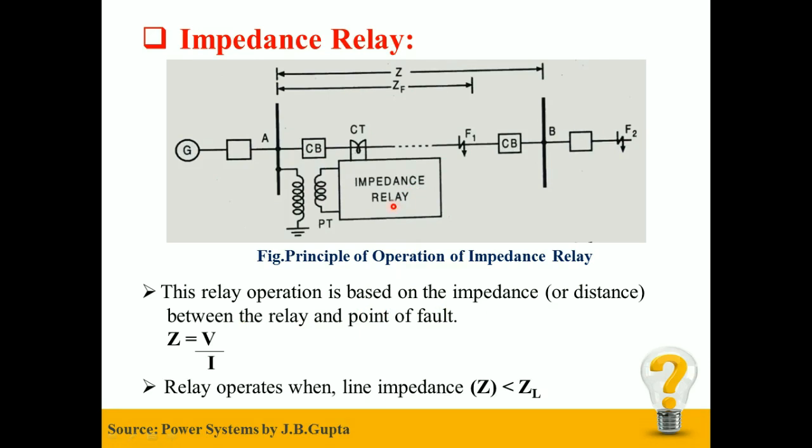Figure shows the arrangement for distance protection for typical transmission line. The voltage element of impedance relay receives from PT secondary and current element receives supply from CT secondary. It measures the impedance at relay location by the formula Z equals V upon I, where V is the secondary voltage from the PT and I is the secondary current from the CT.